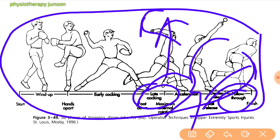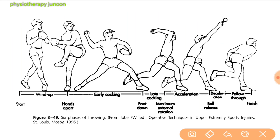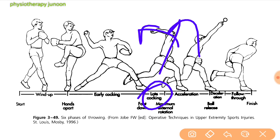These are the six phases of throwing activity. Now we study how the athlete gets trauma or pain. Athletes who experience pain in the late cocking phase usually localize symptoms to the anterior shoulder. The position of the arm during the late cocking phase is maximal abduction and external rotation, which challenges the anterior stability of the GH joint. Pain during this stage can result from anterior instability or from the rotator cuff due to secondary impingement related to anterior instability.